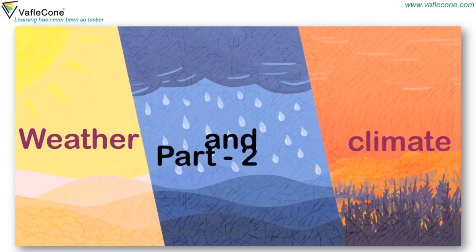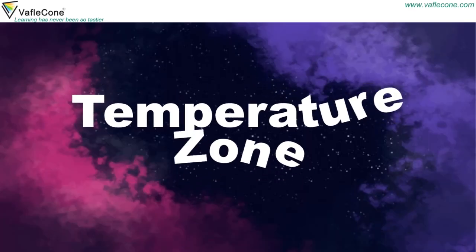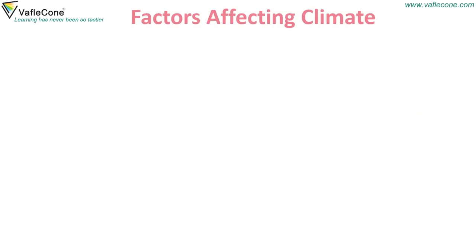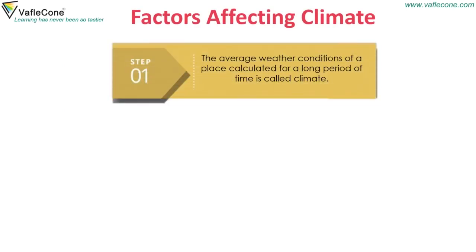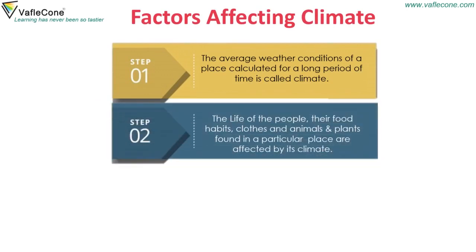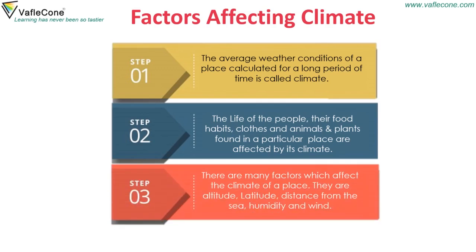Weather and Climate Part 2. The average weather conditions of a place calculated for a long period of time is called climate. The life of the people, their food habits, clothes, and animals and plants found in a particular place are affected by its climate. There are many factors which affect the climate of a place. They are altitude, latitude, distance from the sea, humidity, and wind.